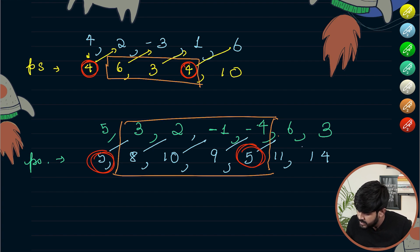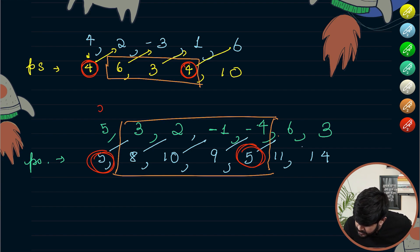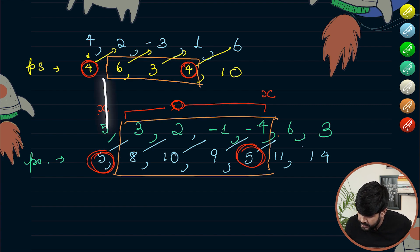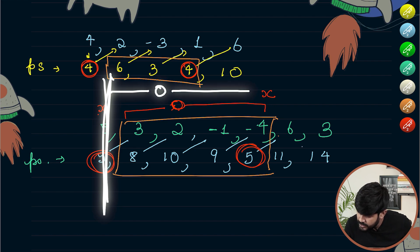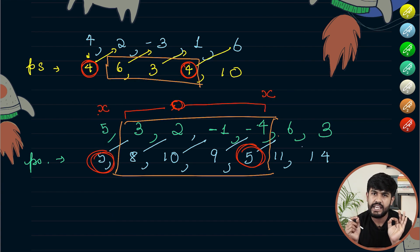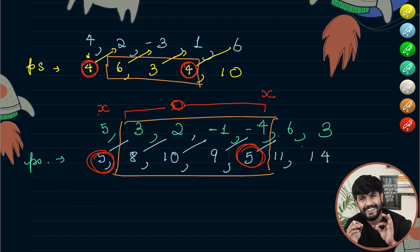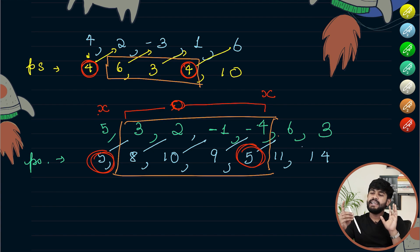Why does this happen? The prefix sum is the cumulative sum up to each point. If the sum up to some point is x, and the subarray between that point and a later point sums to 0, then the prefix sum at the later point is also x, because x plus 0 equals x. So if we see the same prefix sum value again, that indicates a subarray with zero sum.